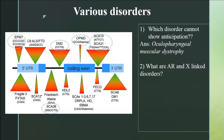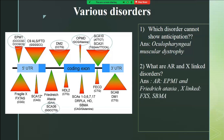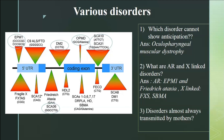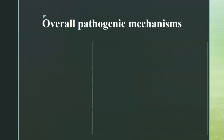For X-linked repeat disorders: Fragile X syndrome is X-linked, and SBMA — spinal and bulbar muscular atrophy — is also X-linked. Myotonic dystrophy is a triplet repeat disorder that is almost always transmitted by mothers. The pathogenic mechanism varies depending on where the repeat occurs: near the promoter (Fragile X), within introns affecting splicing, in the 3' UTR disrupting RNA homeostasis (myotonic dystrophy), or within the protein coding region (polyQ disorders like Huntington's).